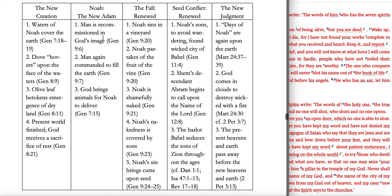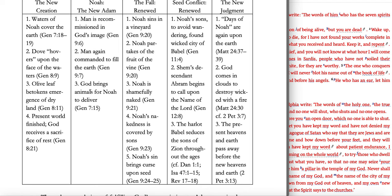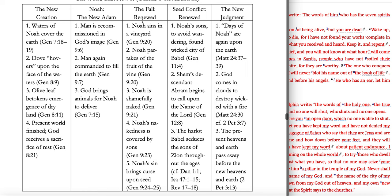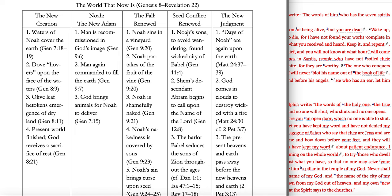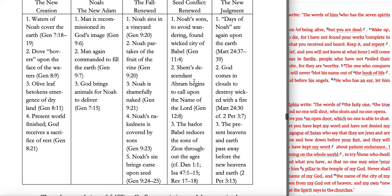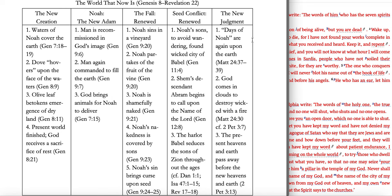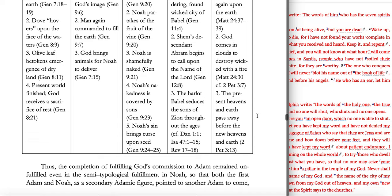The new creation — Noah is the new Adam. Waters of Noah cover the earth; the dove hovers upon the face of the waters, just like the spirit hovered on the waters in Genesis 1; the olive leaf betokens emergence of dry land. The present world is finished — God receives a sacrifice of rest in Genesis 8:21. Man is recommissioned in God's image, commanded to fill the earth. God brings animals for Noah to deliver. Then the fall renewed: Noah sins in a vineyard; Noah partakes of the fruit of the vine; Noah is shamefully naked; Noah's nakedness is covered by his sons; Noah's sin brings a curse upon his seed — Ham's son. The seed conflict is renewed; Noah's sons, to avoid wandering, found the wicked city of Babel. Shem's descendant Abram begins to call upon the name of the Lord in Genesis 12:8. The harlot Babel seduces the sons of Zion throughout the ages. And the new judgment — the days of Noah are again upon the earth in Matthew 24; God comes in clouds to destroy the wicked with fire in Matthew 24:30 and 2 Peter 3:7; the present heavens and earth pass away before the new heavens and earth in 2 Peter 3:13.